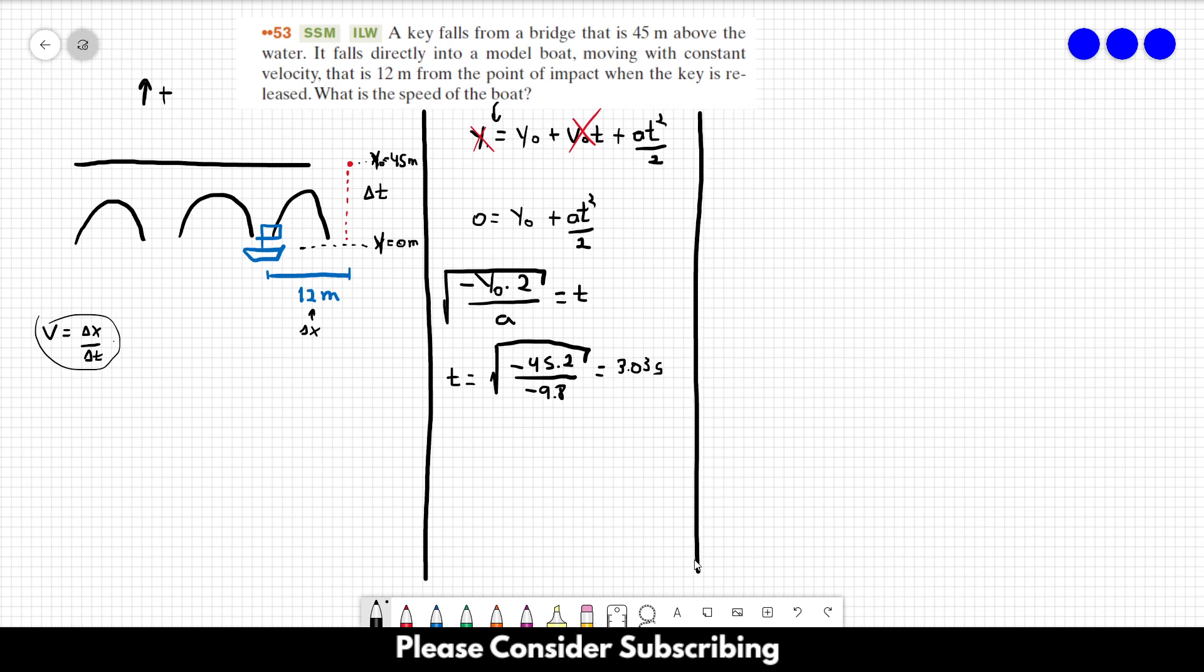So the speed of the boat equals delta x, which is 12, over 3.03. And this is roughly 4 meters per second. So this is the answer to this exercise.